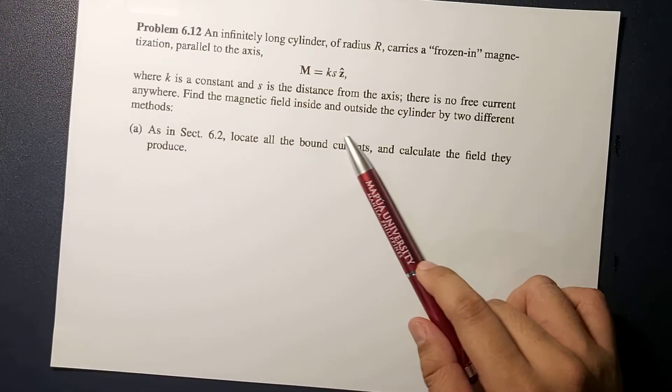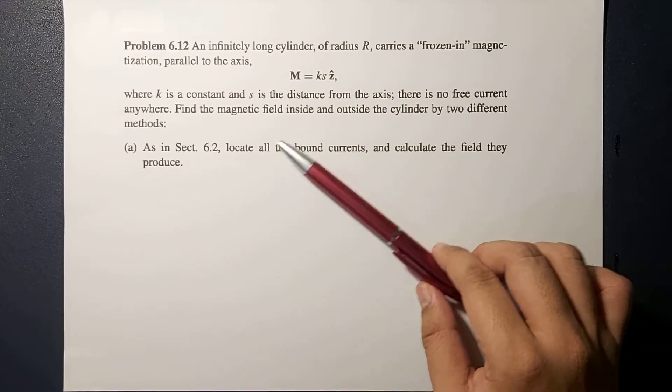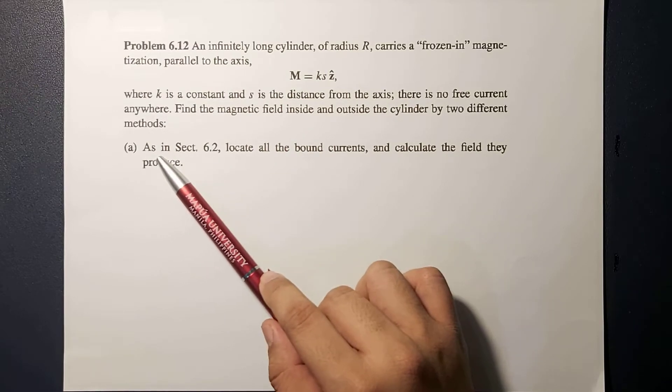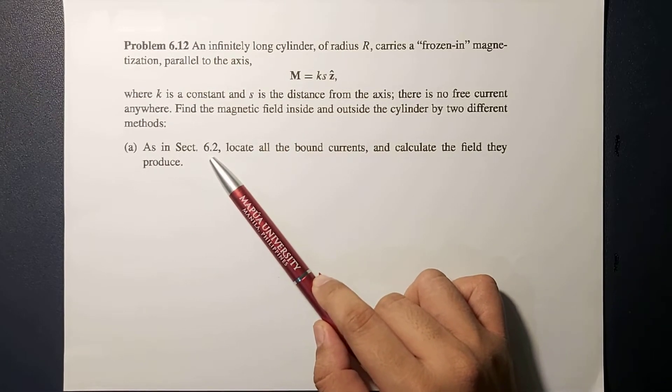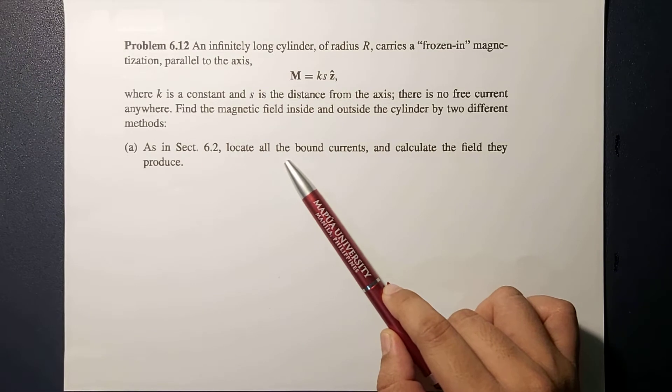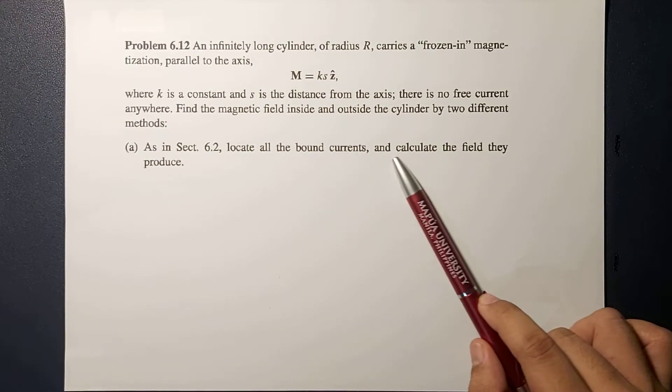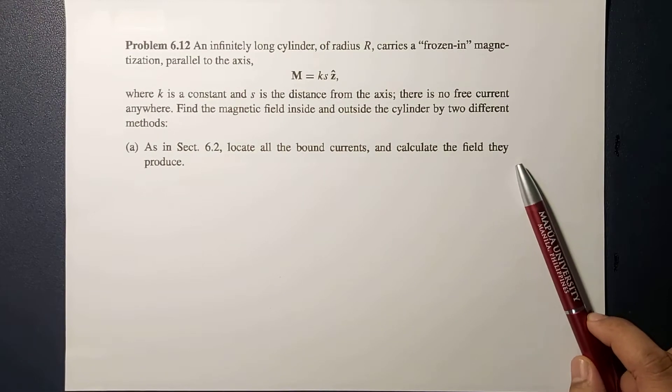So in this video, we're going to solve for the first method. We're in section 6.2 of our book: locate all bound charges, all bound currents, and then from there we calculate the field that they produce.